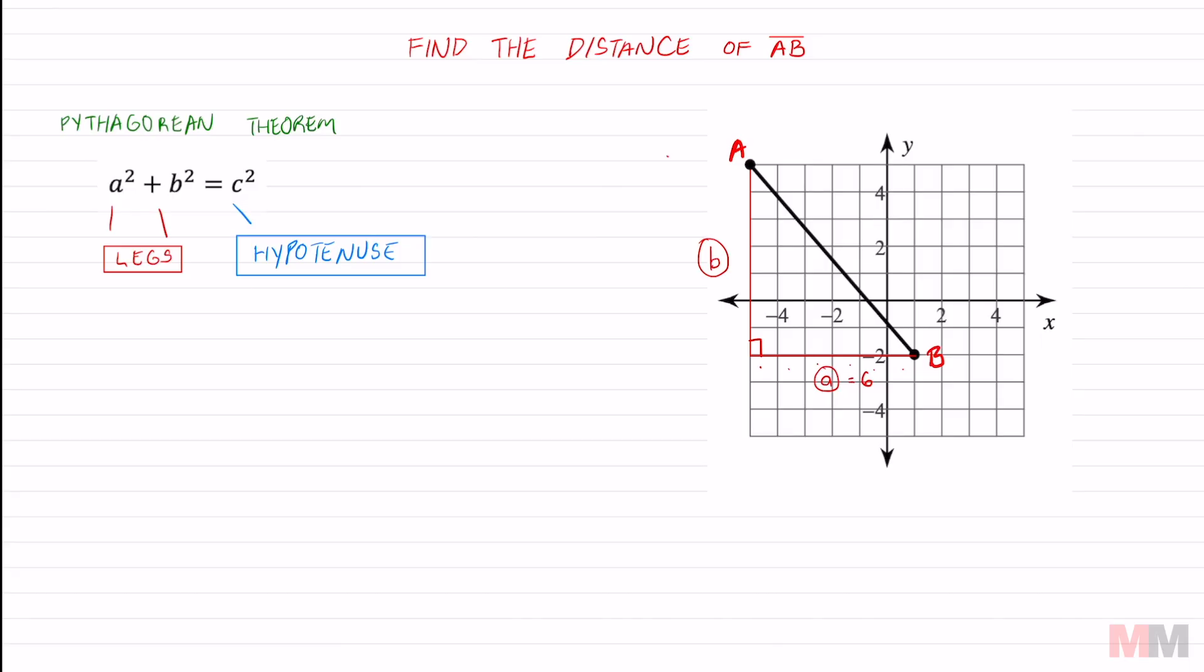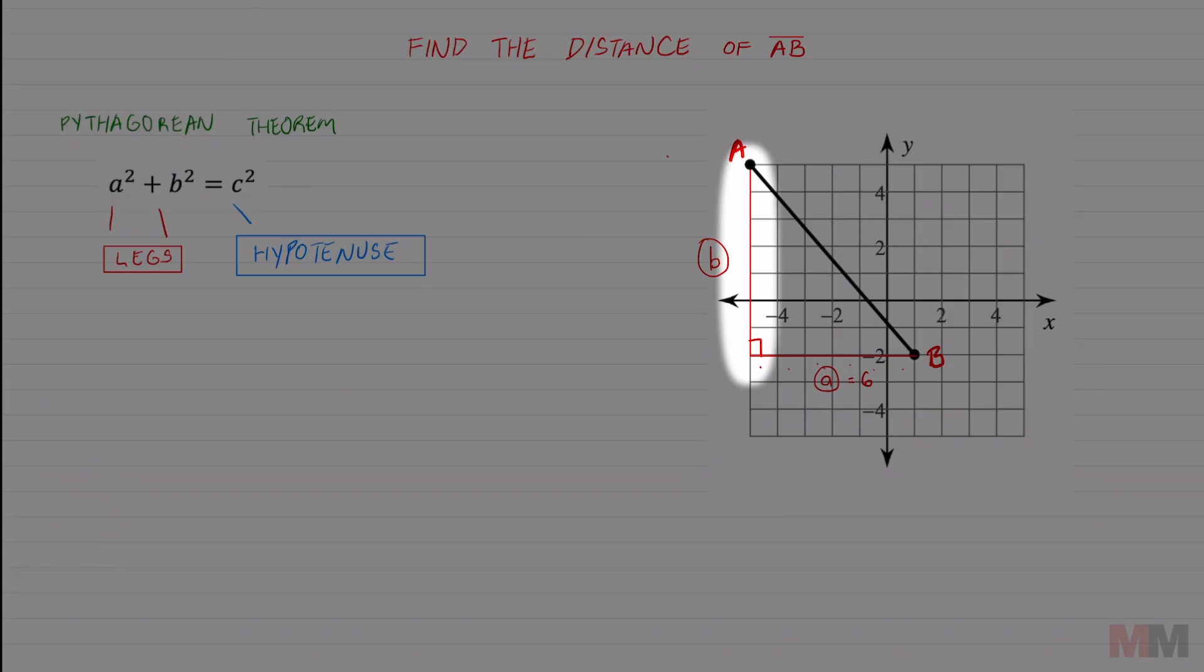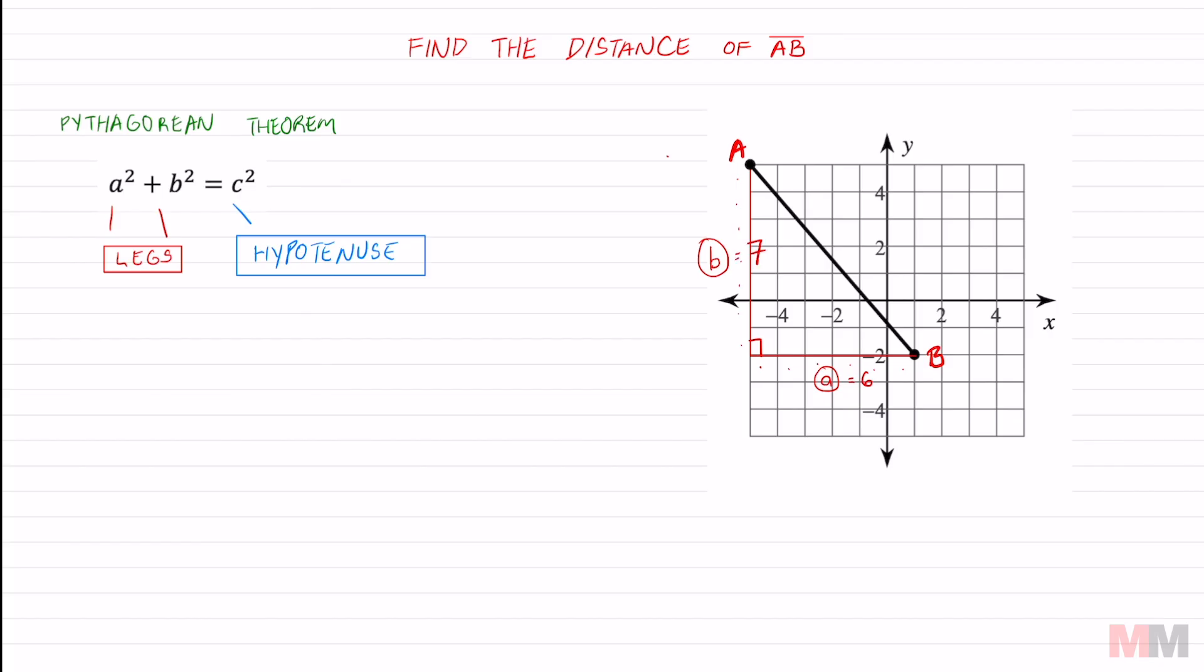And B going vertical along the y-axis. One, two, three, four, five, six, seven. We know that B is seven. Those are what we're gonna use into the Pythagorean theorem to find the diagonal length.